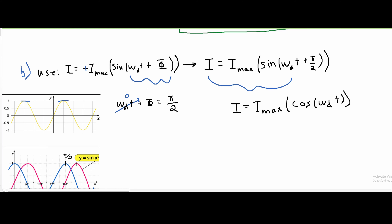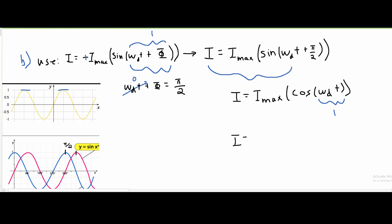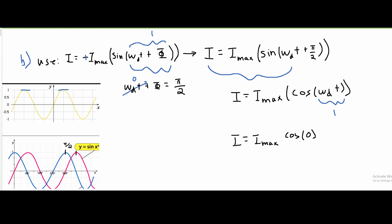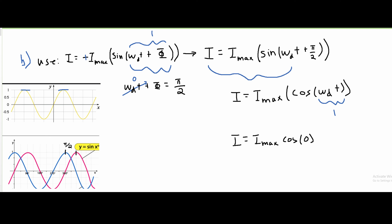We said the maximum current occurs when our sine value equals 1. Applying the same rule here, cosine must also equal 1. Cosine equals 1 when its argument is 0, so our I equals I-max times cosine of 0. The maximum current occurs here. Our cosine of 0 is just 1, so now we get that I equals I-max.